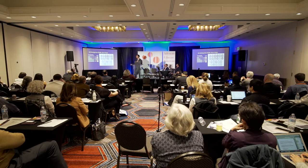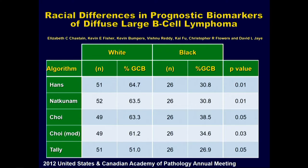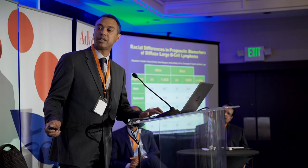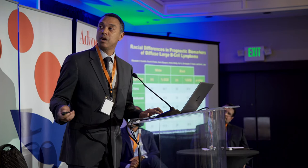We used immunohistochemistry stains to separate those two subtypes — germinal center-like and non-germinal center-like B-cell lymphoma — using tissue microarrays. Using patients from University of Alabama Birmingham and Emory, in a relatively small dataset of 26 black patients and 51 white patients, we found that the more favorable germinal center-like subtype occurred in about 50-60% of white patients depending on the algorithm used — close to expected numbers in the literature — whereas in black patients, this favorable subtype occurred only about 30% of the time, suggesting possible biological differences in this population.